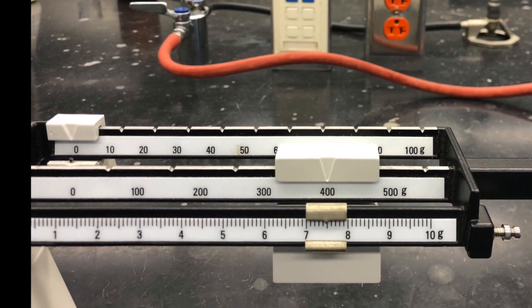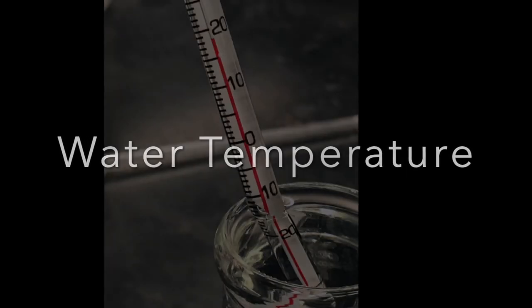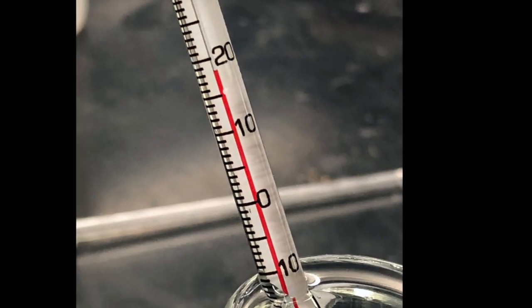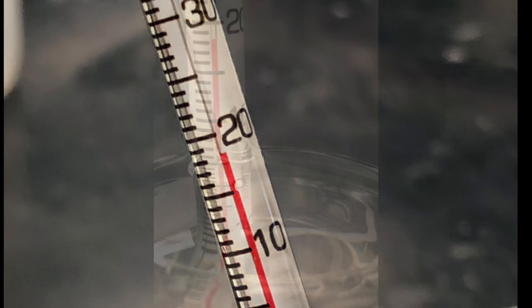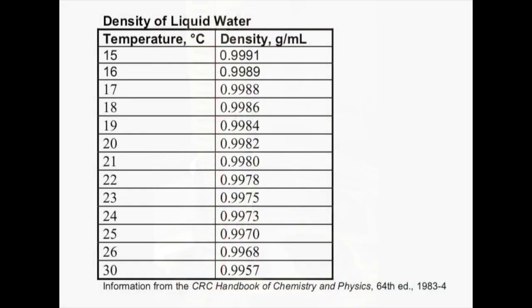We'll record that mass in our data sheet, then we'll take the water's temperature. Once we have the water's temperature and the mass, we will be able to find the volume of the flask. The volume of the flask is obtained by taking the mass of the water and using the density to convert that into volume.